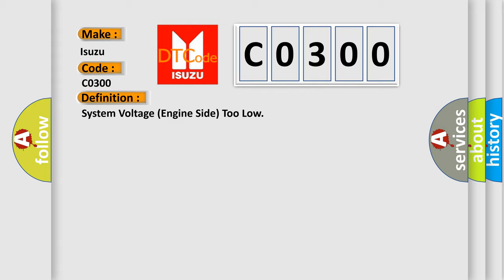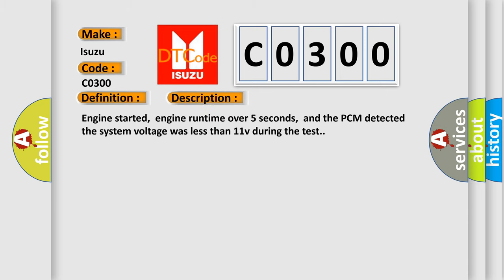And now this is a short description of this DTC code. Engine started, engine run time over five seconds, and the PCM detected the system voltage was less than 11V during the test.